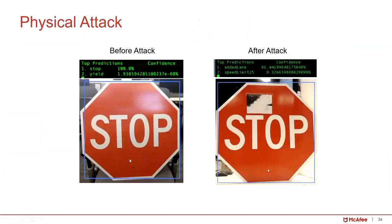This shows the physical attack — a live demo with a real stop sign. We get 100% recognition of this as a stop sign. But after we carefully craft a sticker and place it in a specific location, the image recognition system recognizes it as an added lane with 81% confidence after the attack.